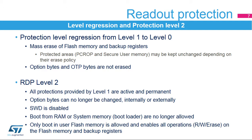Readout Protection Level 2 provides the same protection as in Level 1, but the protection becomes permanent. Option bytes cannot be modified, so once the RDP protection is set to this level, there is no way to modify it and level regression with mass erase mechanism is no longer possible. This level must only be considered in the final product when the development stage is completed. Note that to ensure there are no back doors, this protection cannot be bypassed, even at ST Factory.